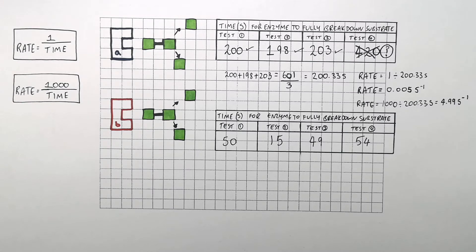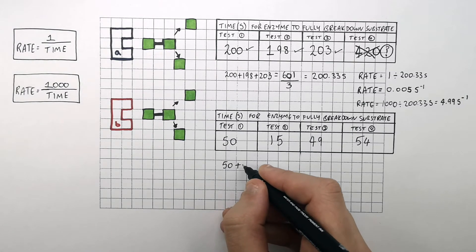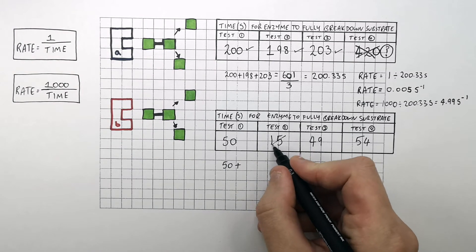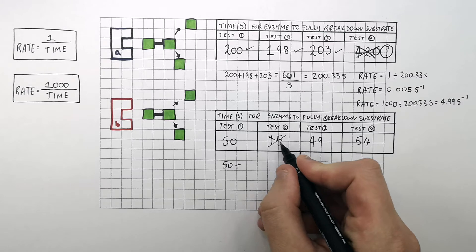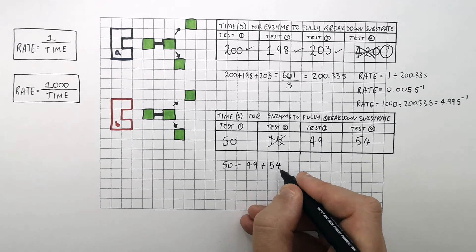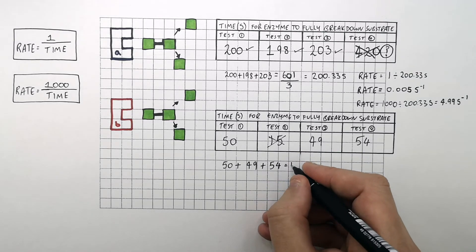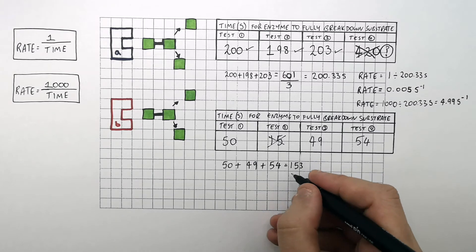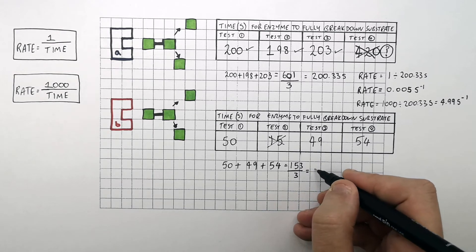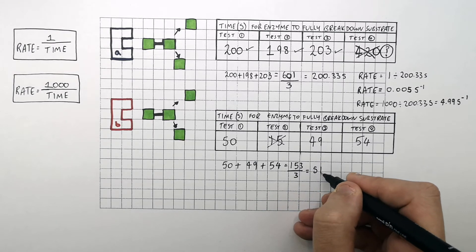For enzyme B, it was 50 seconds, 15 seconds, 49 and 54 seconds for each test. So 15 seconds is clearly an anomalous result, so we exclude it when calculating the mean. It's 50 plus 49 plus 54 seconds, which equals 153 seconds, divided by 3, giving an average time of 51 seconds.